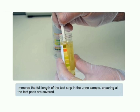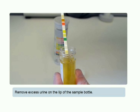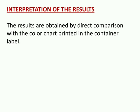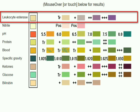Here is how we dip the dipstick inside the urine bottle. Immerse the full length of the test strip in the urine sample, ensuring all test parts are covered. Then remove the excess urine on the lip of the sample bottle. After the time is over, mark the color change and report. The results are obtained by direct comparison with the color chart printed on the container label — this is how the interpretation chart looks, with different color standards for every chemical parameter.